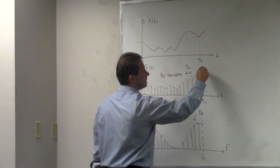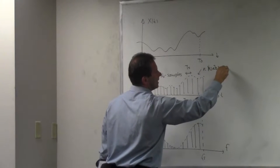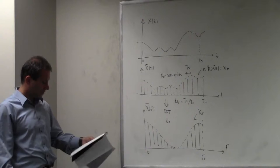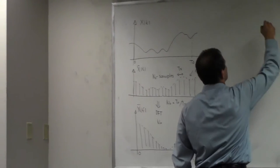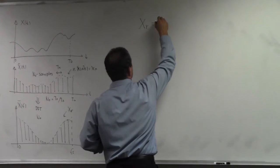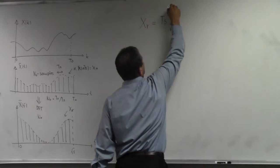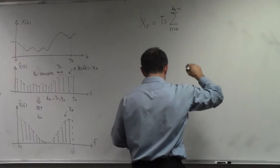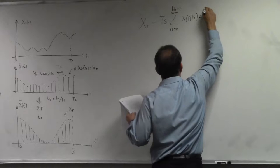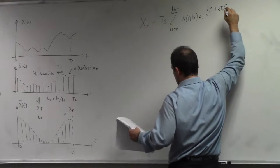The samples in the frequency domain are referred to as XR. The sample in the time domain, N times X of Nts, is referred to as XN. We have a relationship for how these XRs are calculated — this is our discrete Fourier transform. They are calculated as Ts times the sum, when N goes from 0 to N0 minus 1, of X(Nts) times e to the minus j·N·R·2π·F0·Ts.